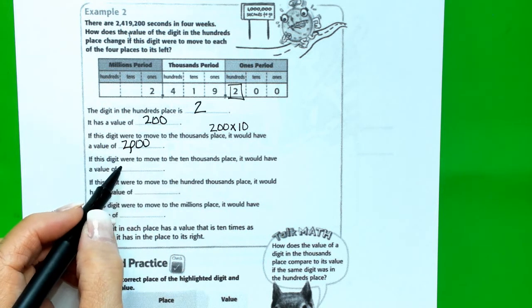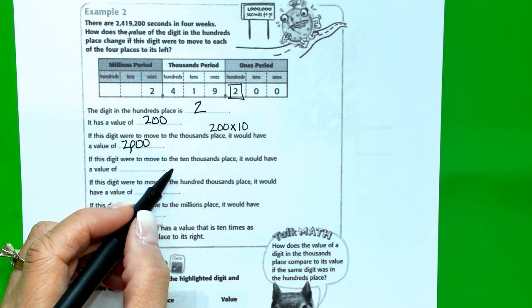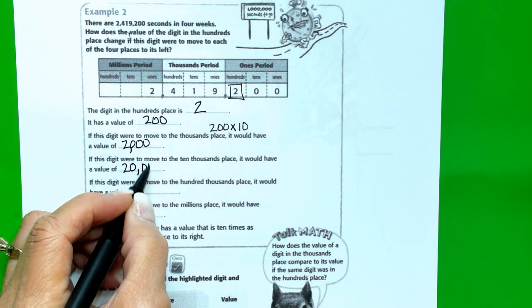If this digit were to move to the ten thousands place, it would have a value of 20,000.